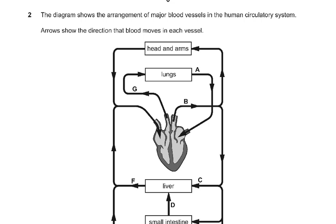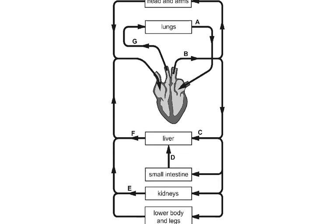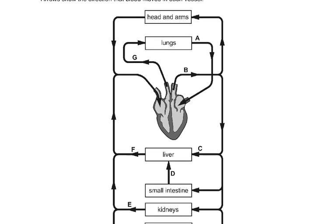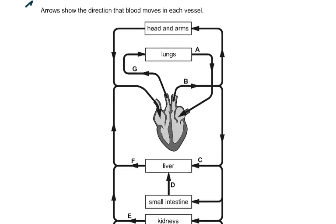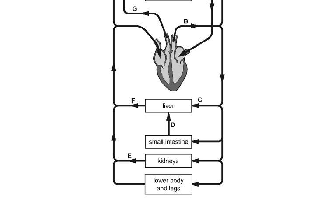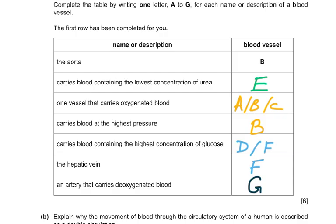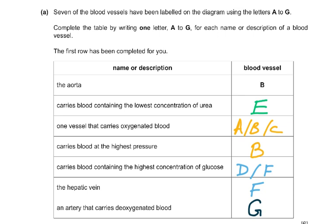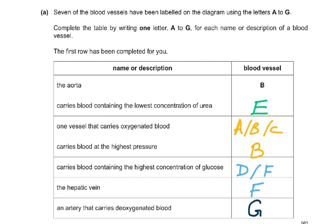Question 2: the diagram shows the arrangement of major blood vessels in the human circulatory system, with arrows showing the direction blood moves. Seven vessels are labeled A to G. Complete the table by writing one letter for each name or description. The first row is done for you: the aorta is B.